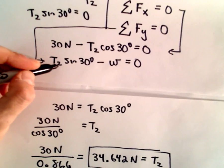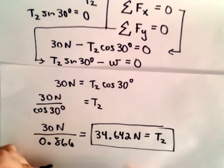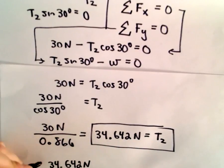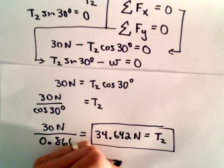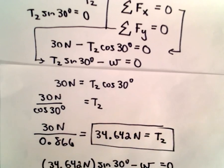Now, all I'm going to do is simply substitute that value into our second equation. So, we have T2, which is 34.642 newtons, times sine of 30 degrees, minus W, that's going to equal 0.